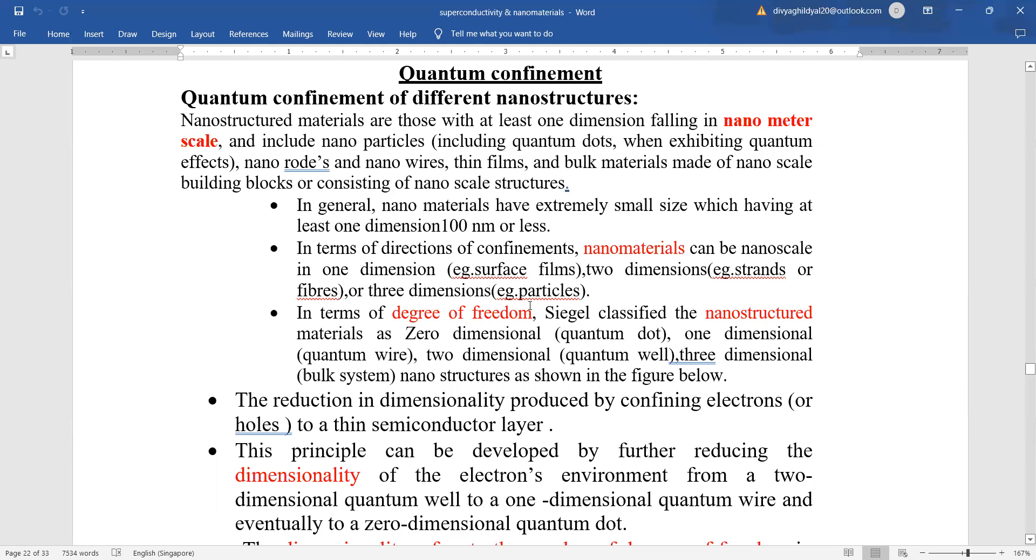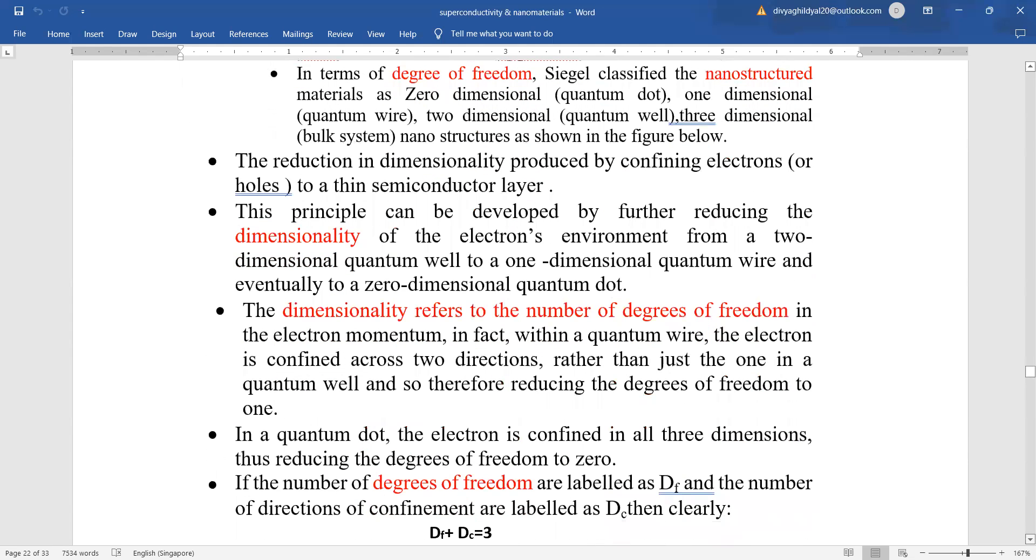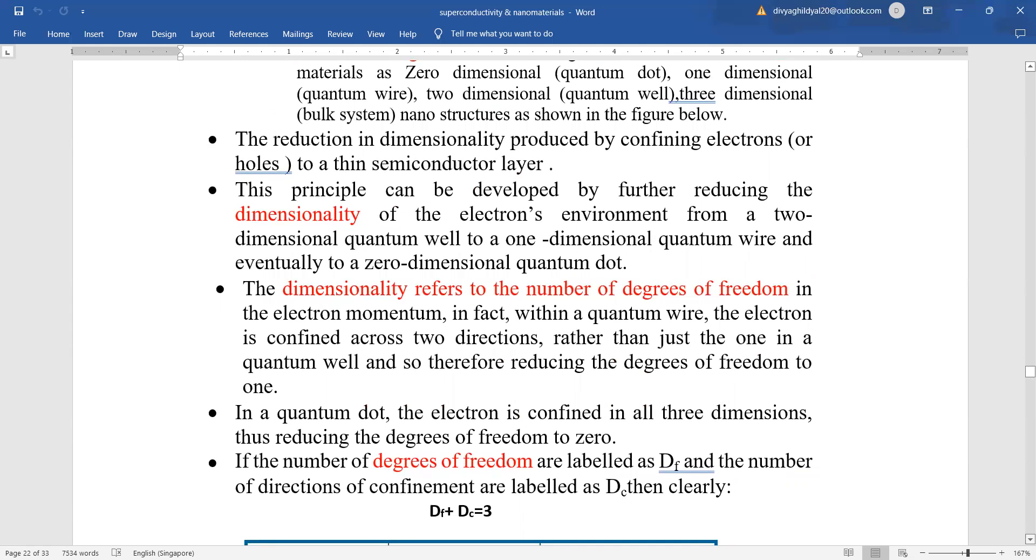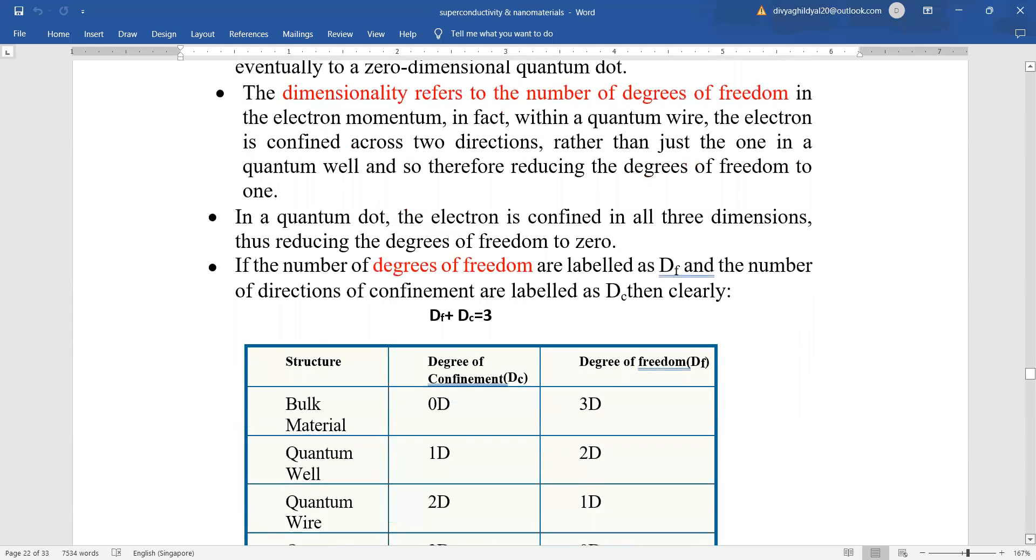In terms of degrees of freedom, Siegel classified the nanostructured materials as zero-dimensional (quantum dot), one-dimensional (quantum wire), two-dimensional (quantum well), and three-dimensional (bulk). When we reduce the dimensionality produced by confining the electrons into a thin semiconductor layer, the principle can be developed by reducing the dimensionality, which refers to number of degrees of freedom.